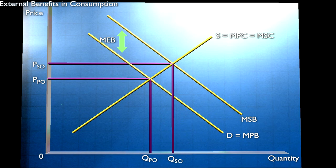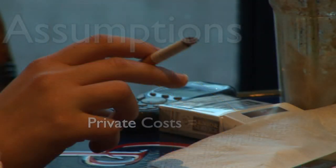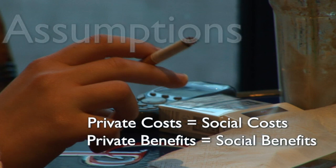So we started off by saying that for markets to work effectively, private costs need to be equal to social costs, private benefits need to be equal to social benefits, and we have found four kinds of externality which causes a breakdown in this identity.